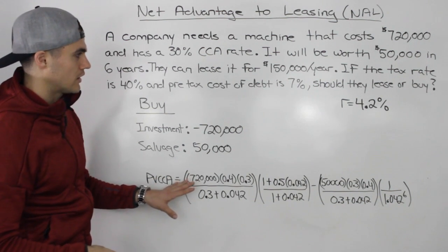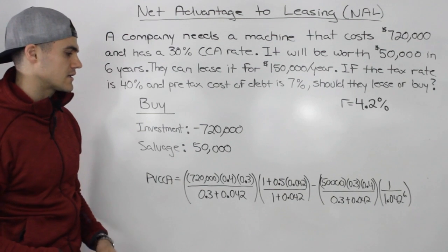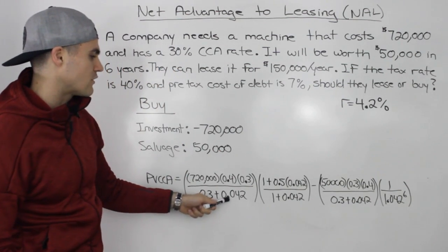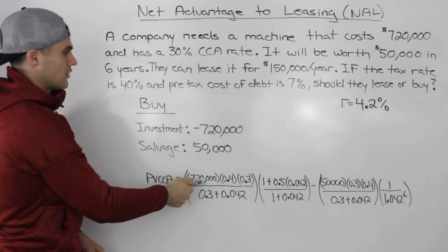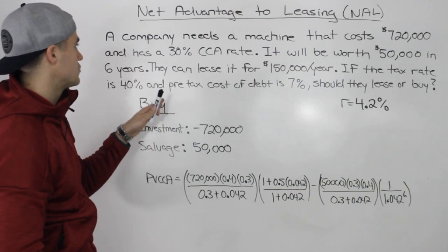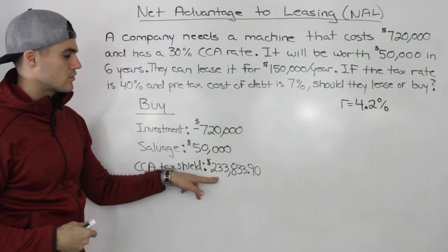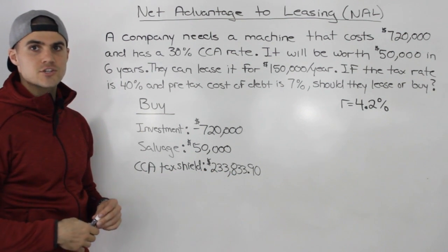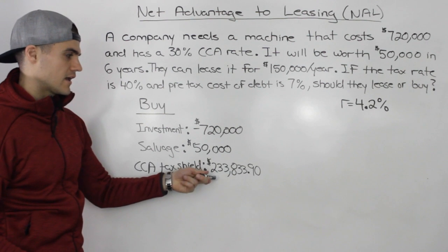Inputting the parameters into the CCA tax shield formula — cost of the machine $720,000, CCA rate 30%, tax rate 40%, time six years, and discount rate 4.2% — you end up getting $233,833.90. That is the present value of the CCA tax shield. Because CCA reduces our taxes, that is a positive cash flow for us.